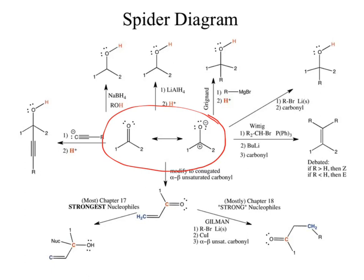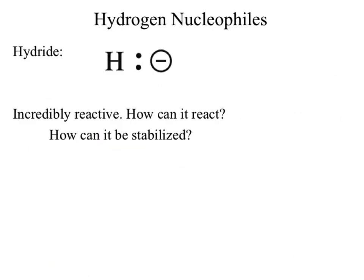Some of them we won't spend as much time on — for instance, acetylide we barely talk about. So we'll start with the exciting one: a hydrogen nucleophile. How can I possibly get a hydrogen nucleophile? Why might we consider a hydrogen nucleophile impossible to get?